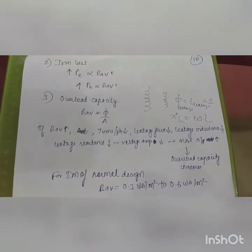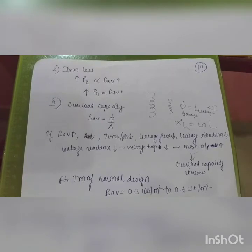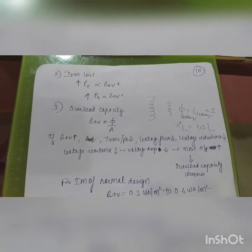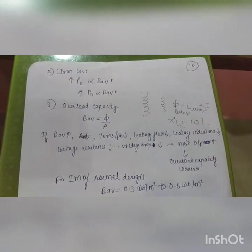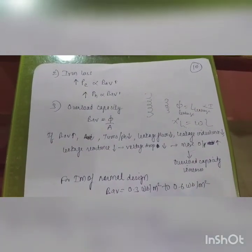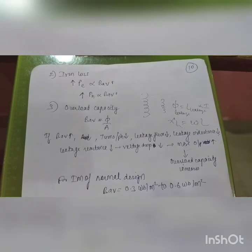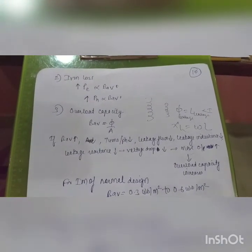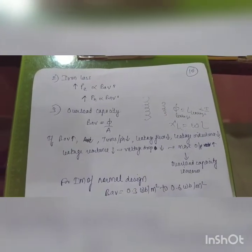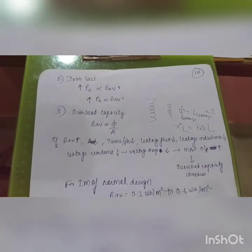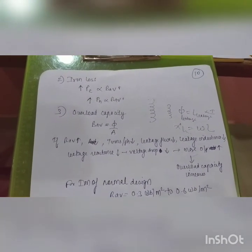So with high flux density there are two disadvantages: reduced power factor and increased temperature rise due to higher iron losses. However, there is one advantage: the overload capacity of the induction motor increases. The typical range of Bav is 0.3 to 0.6 Wb/m². If the thermal limit is exceeded, the insulation will be damaged first, hot spots will form, windings will short, and the induction motor will be damaged.